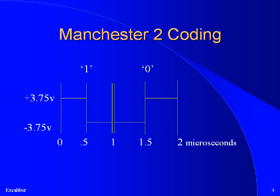Here is a diagram of the signals for a one bit followed by a zero bit. At the beginning of the one bit — time zero on the timeline — the voltage on the wire is plus 3.75 volts. Midway into the one microsecond bit, the signal plunges to minus 3.75 volts, where it remains until the end of the bit. The next bit is a zero bit, so the signal continues at minus 3.75 volts until the middle of the bit, where it rises to plus 3.75 volts.